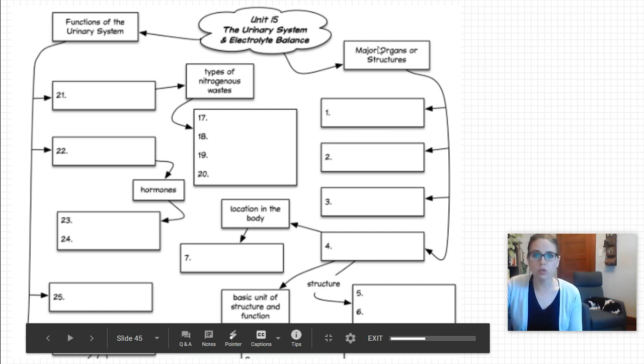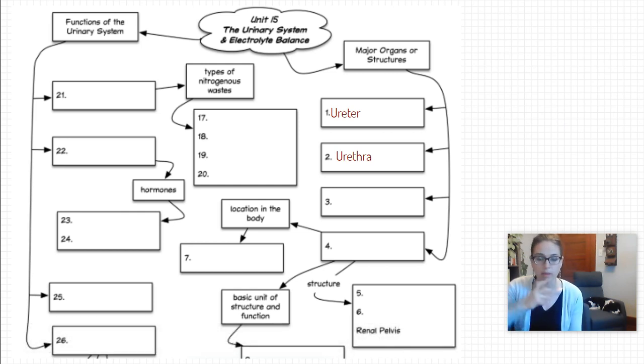We start off here with the major organs or structures of our urinary system. We have your ureters which connect your kidney to the bladder, and remember peristalsis is what pushes urine through. We have the urethra which allows urine to exit your body from your bladder. In females it's much shorter than in males because in males it goes through their reproductive structure.